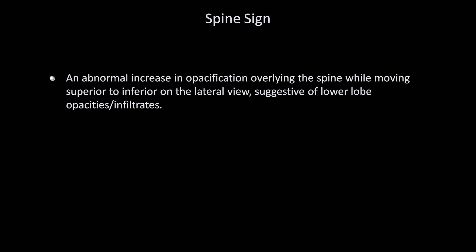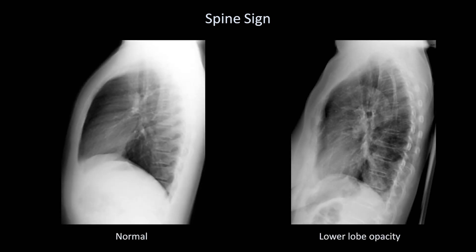Another helpful radiographic sign is the spine sign. This refers to an abnormal increase in opacification overlying the spine while moving superior to inferior on the lateral view, suggestive of lower lobe opacities. On a normal lateral film, there is a progressive increase in lucency moving inferiorly, such that the vertebral body just above the diaphragm is the darkest. An abnormal film shows increased opacification at the inferior-most vertebral bodies, suggesting a lower lobe opacity. It is not possible to tell from the lateral alone whether this is right or left lower lobe.